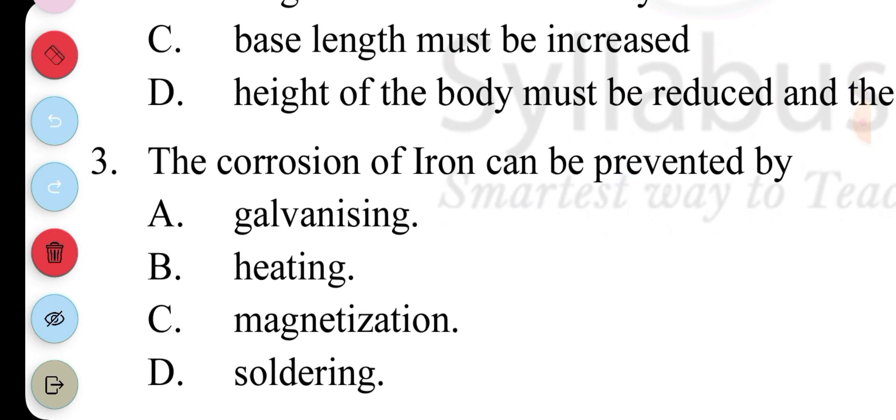Question three, the corrosion of iron can be prevented by A, galvanizing; B, heating; C, magnetization; D, soldering. The answer to question three, A, galvanizing.